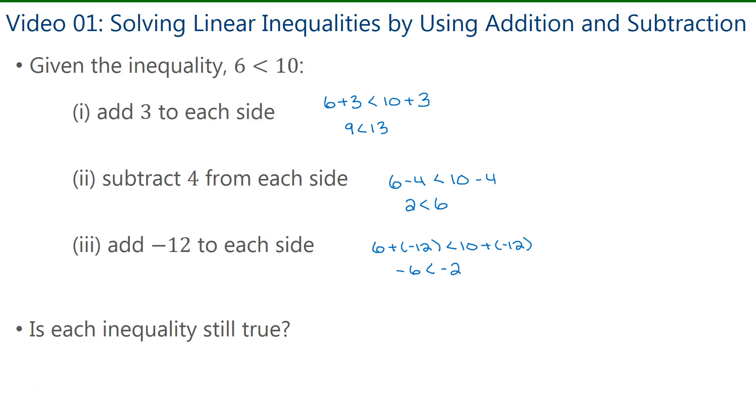Now we need to determine if each inequality is still true. Did adding or subtracting positive or negative numbers affect the inequality? Well in Part 1, we added 3 to each side, and we ended up with 9 is less than 13. Now 9 is still less than 13, so that's true. Part 2, we had 2 is less than 6, that is true. And in Part 3, negative 6 is less than negative 2. So adding or subtracting a positive or negative number did not affect the inequality.